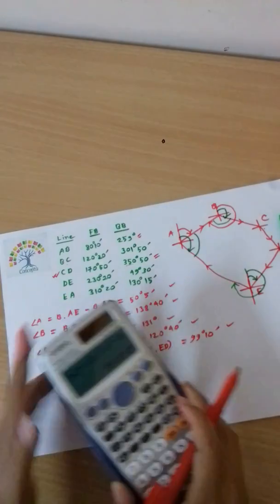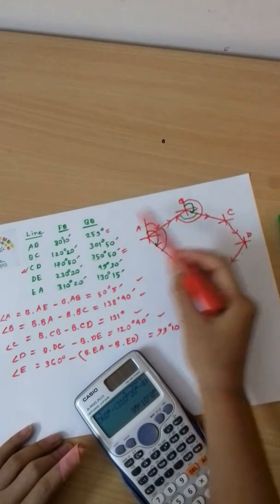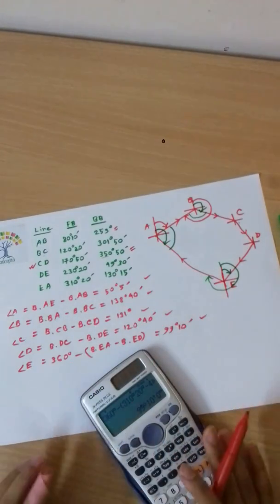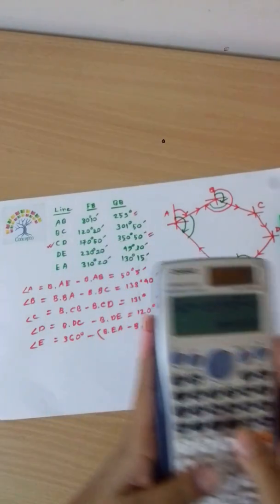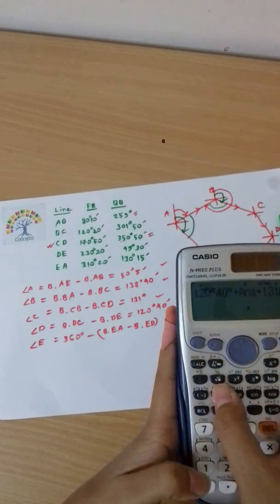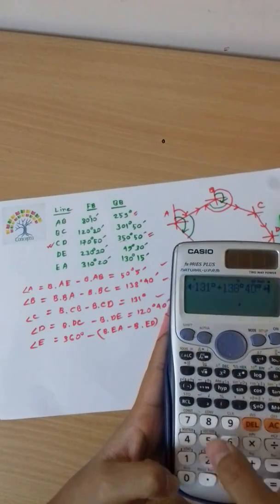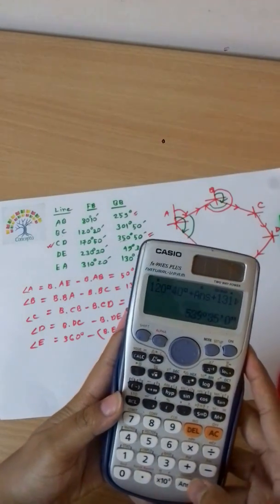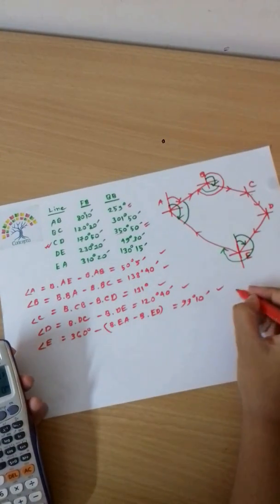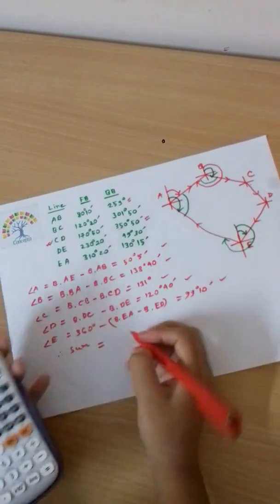Now summing all the angles: 99 degrees 10 minutes plus 120 degrees 40 minutes plus 131 degrees plus 138 degrees 40 minutes plus 50 degrees 5 minutes. The total is 539 degrees 35 minutes.